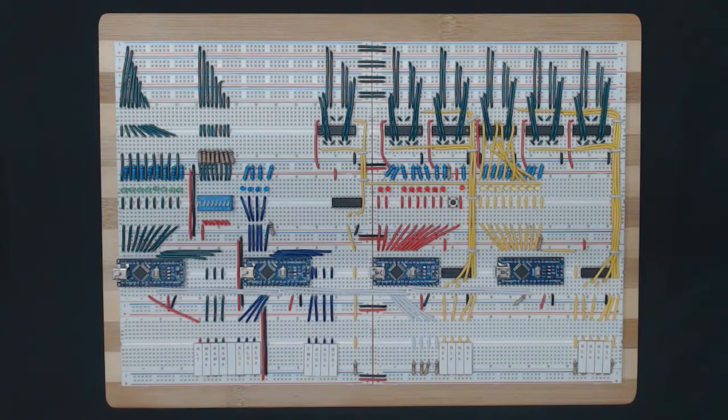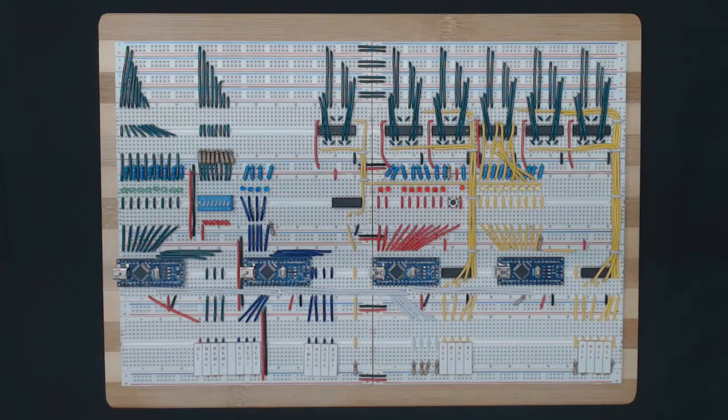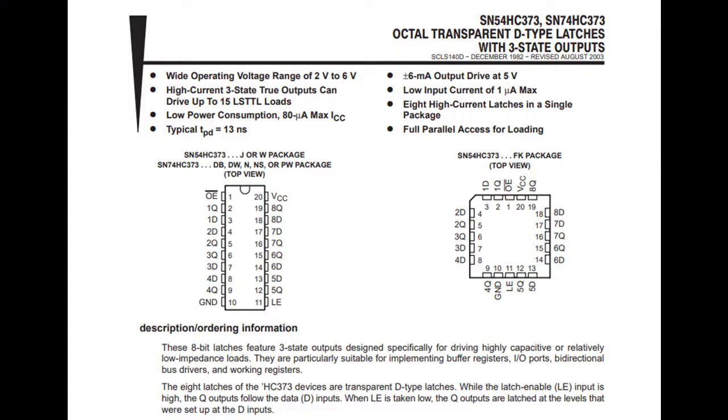If we look at the data sheet for the SN74HC373, we can see that in fact the inputs and the outputs are distinct. All the D pins are inputs and all the Q pins are outputs. Using the set signal sets all the Q pins equal to their respective D pins at the same time.